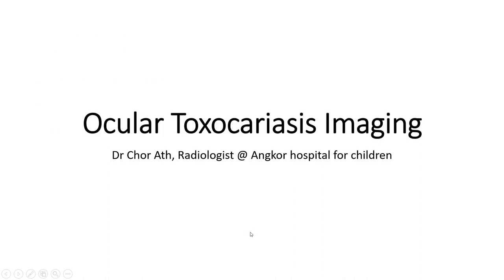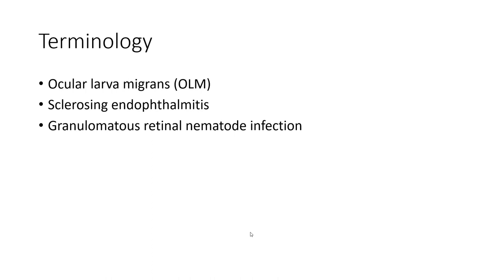Hello everyone, today I'm going to show you about ocular toxocariasis imaging. Toxocariasis in the eye can present in the form of ocular larva migrans, sclerosing endophthalmitis, granulomatous retinal nematode infection.